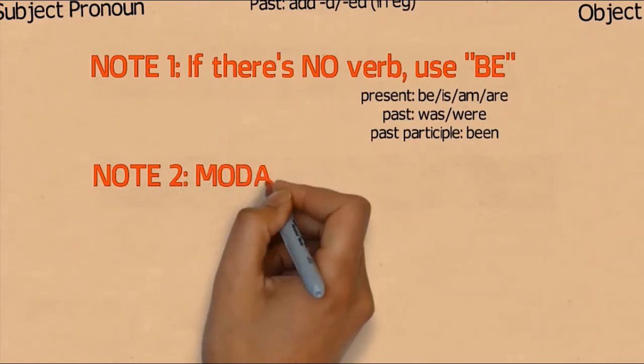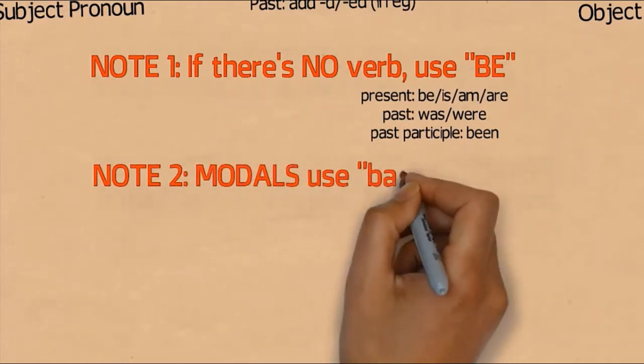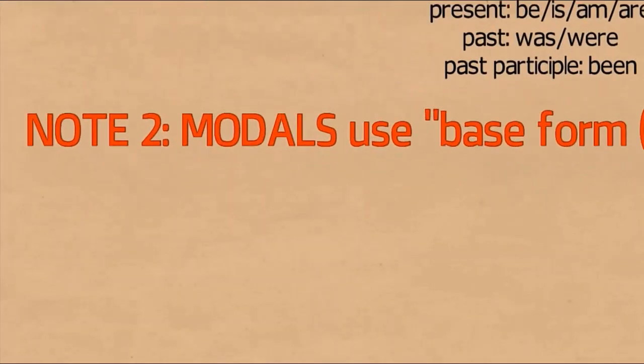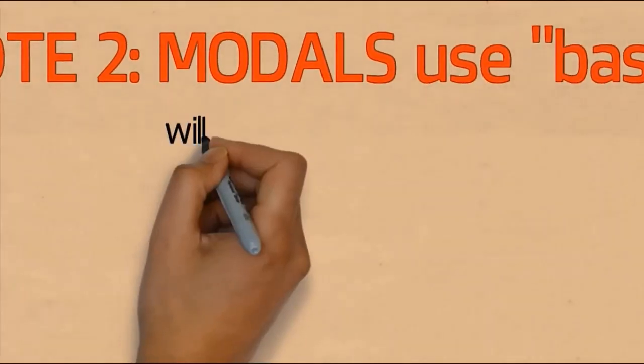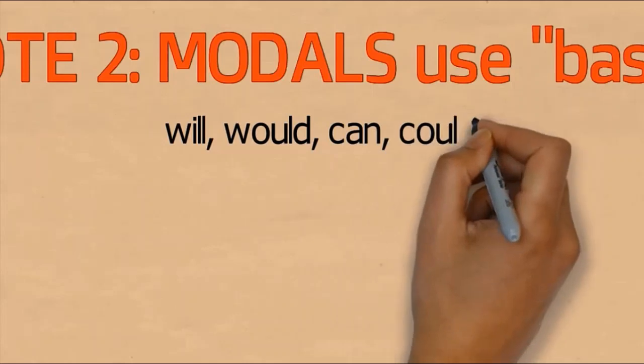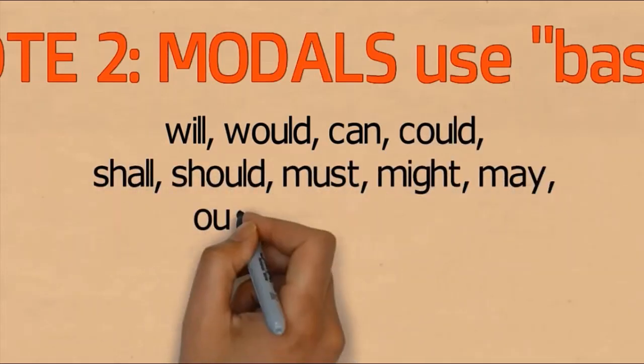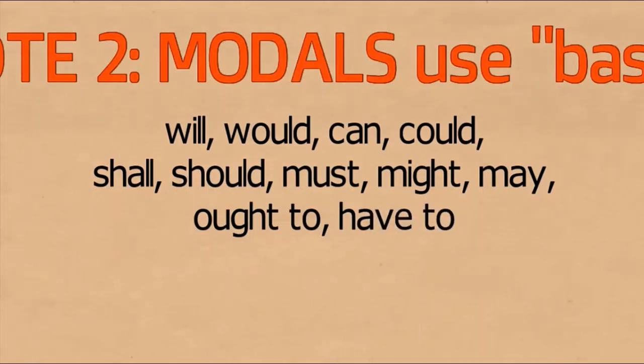Second note: modal verbs. Sometimes verbs have modal forms. If there's a modal, it must be followed by verb 1, base form. What are modals? For example: will, would, can, could, shall, should, must, might, may, ought to, and have to. For modals, they must be followed by the first verb form. Don't add -ing, don't add -s, don't add -d or -ed.